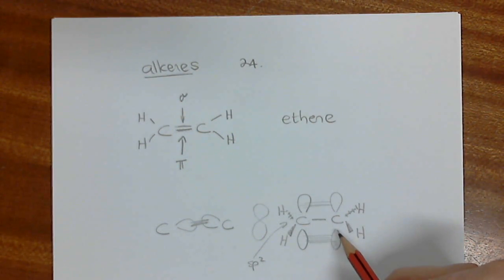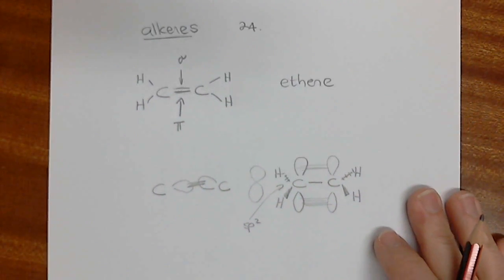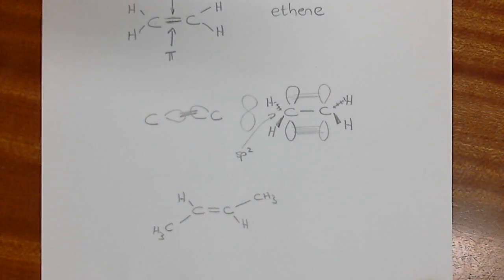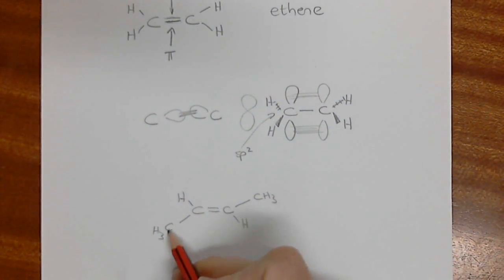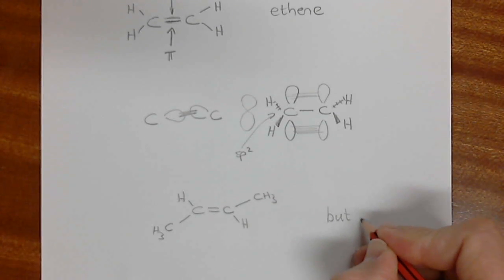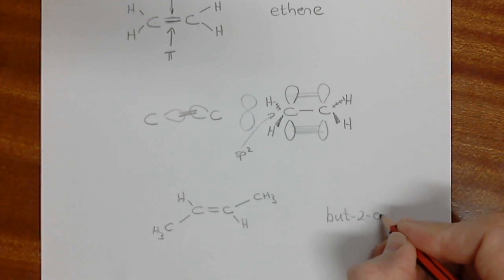We're going to put a CH3 there and an H here, we're going to put a CH3 there and an H here. This is four carbons, it's actually butene, but the double bond is on carbon number two, so it's but-2-ene.